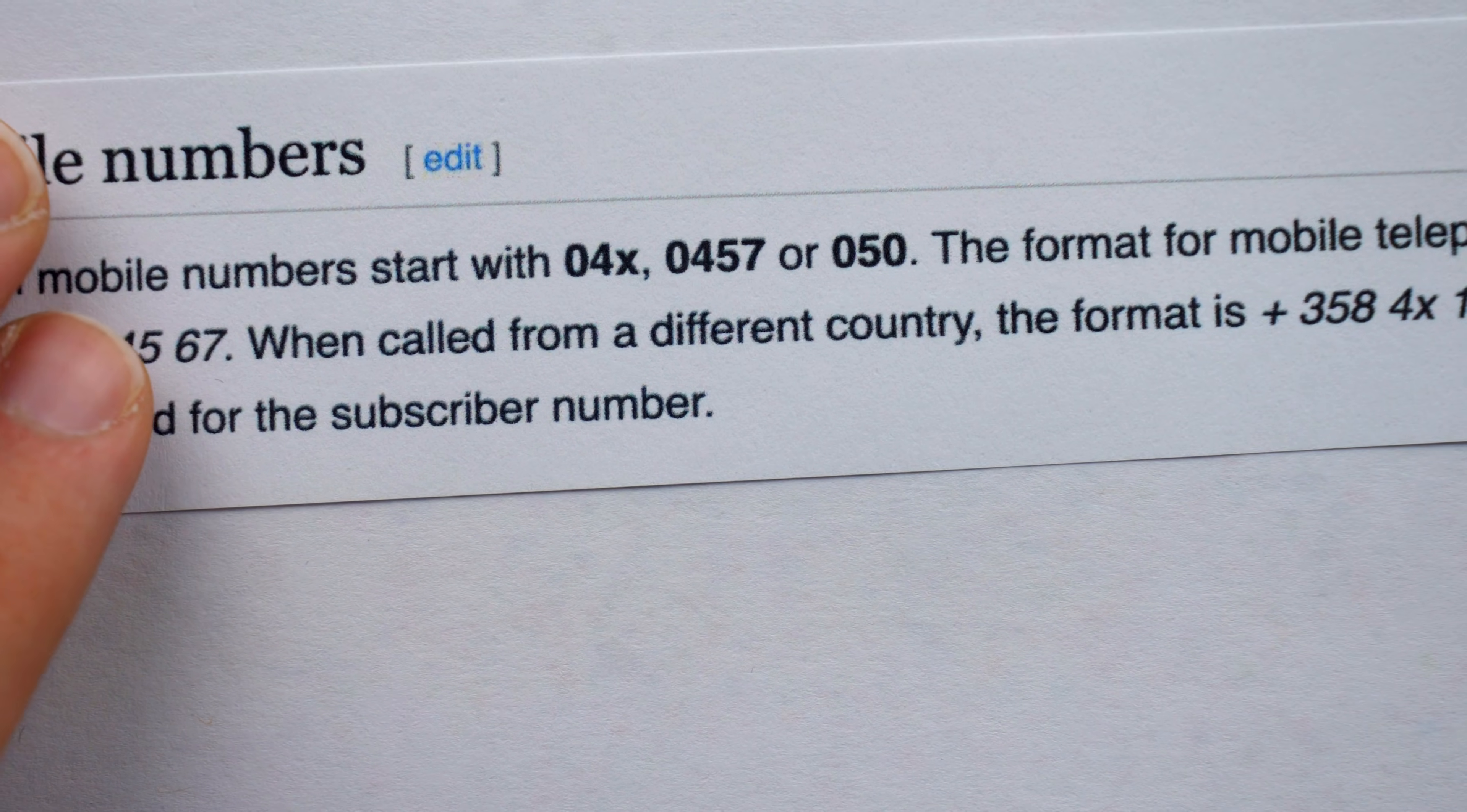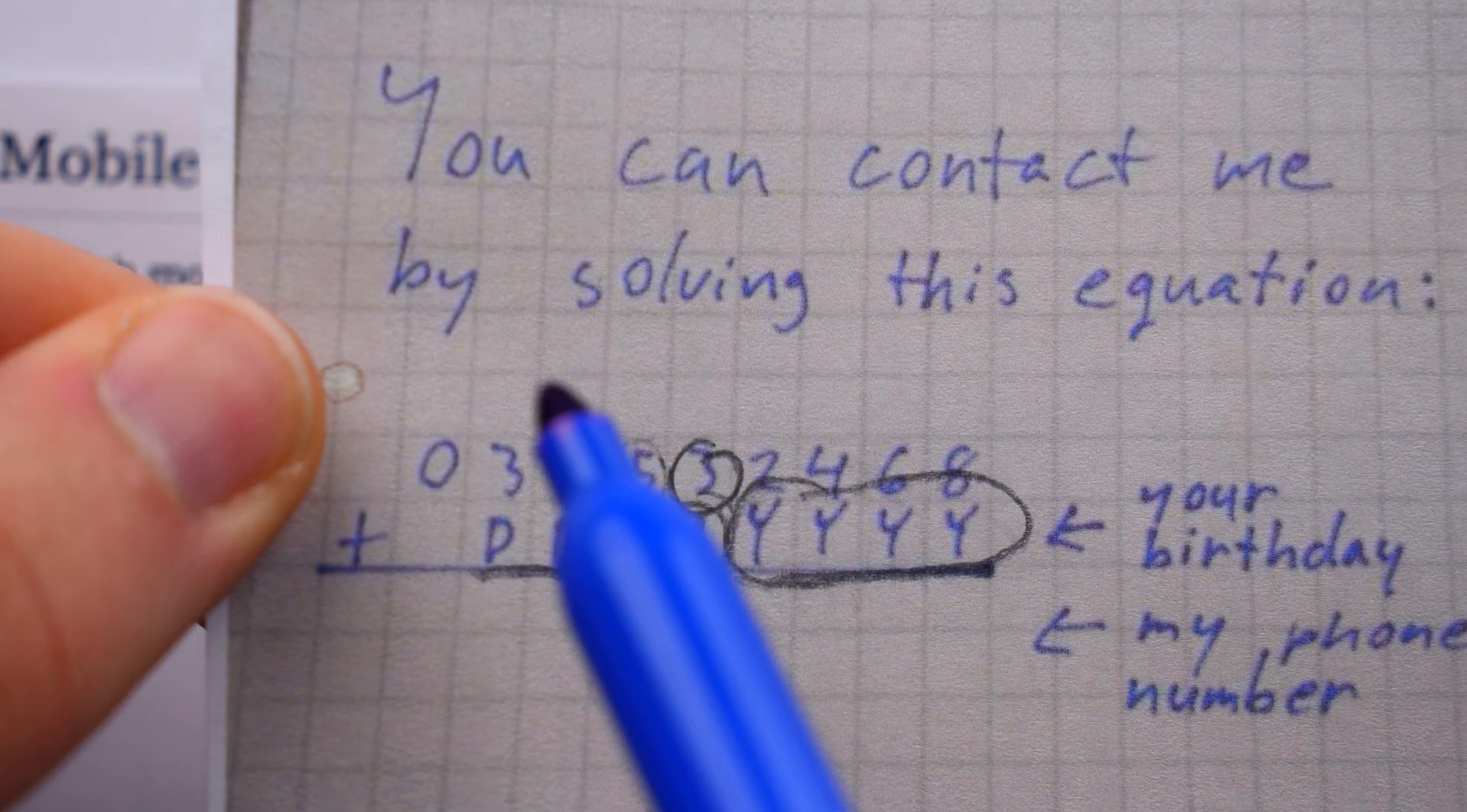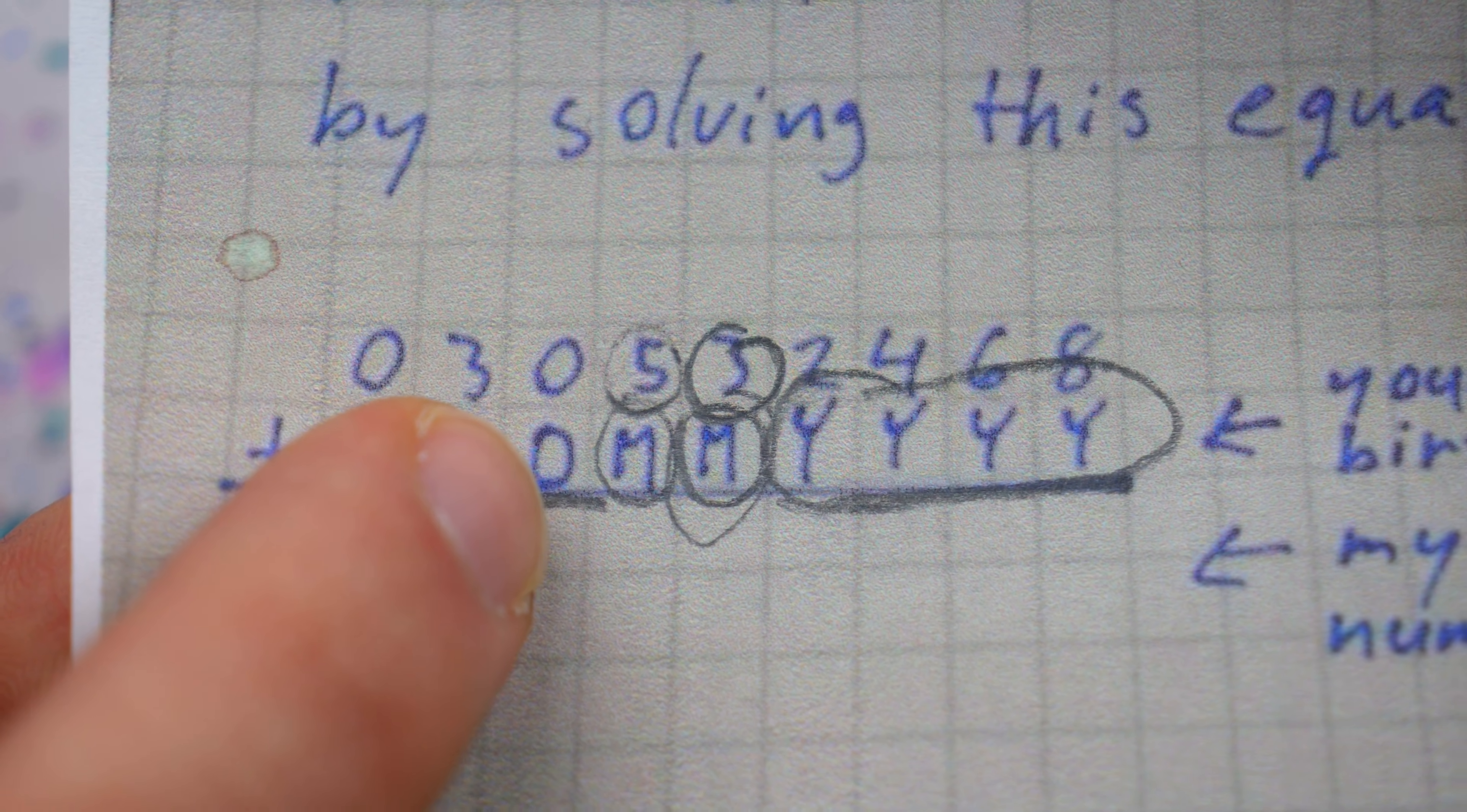While there are some current and historical exceptions, mobile phone numbers in Finland, according to Wikipedia, generally begin with 04X, 0457, or 050. And only 04X and 050 are compatible with this sum. Now if the phone number starts with 04 and then X, so any digit next, then that means the first day digit has to be one, so we get that 04 starting point, and then the second day digit could be anything. So in the 04X situation, only days from the 10th to the 19th are possible.